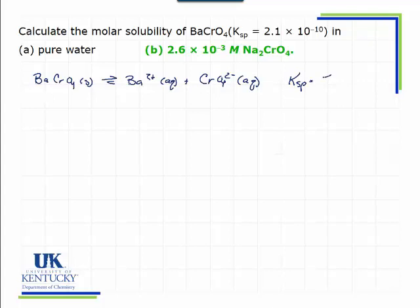Let's write the expression, the law of mass action. We have the barium ion and the chromate ion. When we do our ICE table and dump some of the barium chromate into the solution, there isn't any barium, but there is some chromate already present.